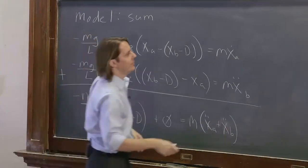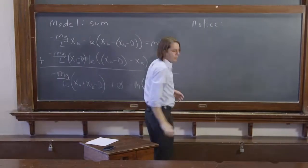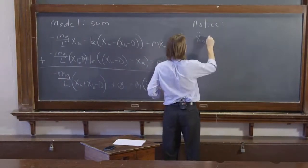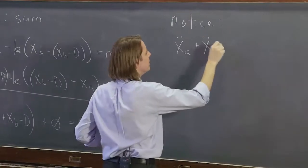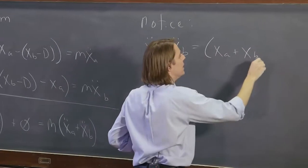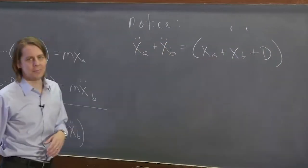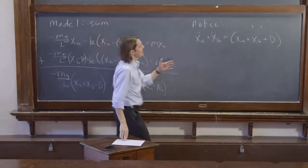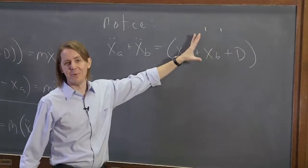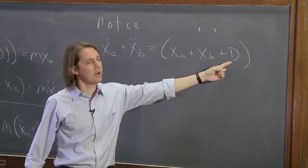But notice this. So let's just do some mathematical trickery here. That we could write that xA double dot plus xB double dot equals xA plus xB even plus d double dot. The whole thing. So we can think of this as the second time derivative of this whole thing as an individual coordinate. And the reason you can stick a d on there is because what is the second time derivative of a constant? It's zero. It doesn't add anything.